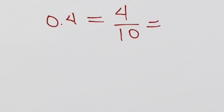Now, 4 over 10 we know can be simplified to 2 over 5. And that's the end of that example.